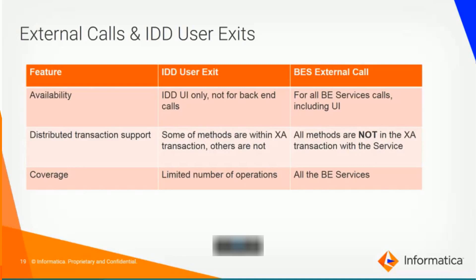Business entity external calls can be compared to IDD user exits, but there are some major differences. First, in terms of availability, BE external calls are available at the API level, whereas IDD user exits work in the UI only. Second, for distributed transaction support, BE external calls work outside XA transactions, so there is no concept of uncommitted data, but in IDD user exits some methods are within XA transactions and others are not. Third, in terms of coverage, external calls are available for all BE services, whereas IDD user exits are available for a limited number of operations.